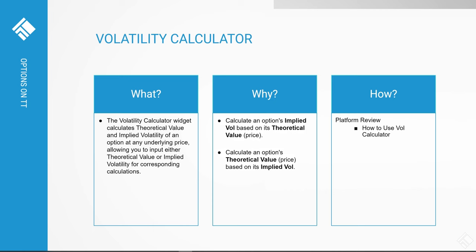Next we'll cover the Volatility Calculator, which is part of the Advanced Options Package. The volatility calculator widget is used for calculating the theoretical value and implied volatility of an option at an underlying price. You can enter a theoretical value of an option to calculate its implied vol, or enter the option's implied vol to calculate its theoretical option price.